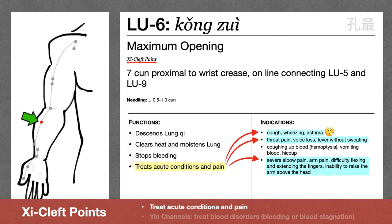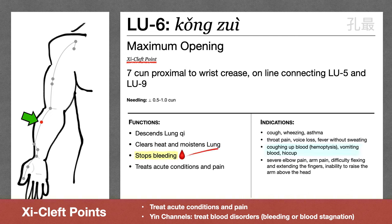Xi cleft points on the yin channels have an additional action of regulating the blood or treating disorders of the blood. So Lung 6 also stops bleeding for things like coughing up blood and vomiting blood.